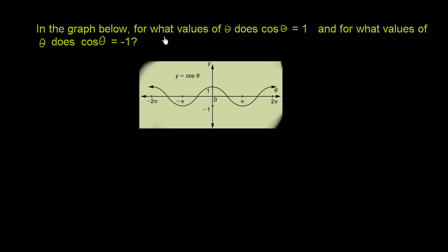In the graph below, for what values of theta does cosine of theta equal 1? And for what values of theta does cosine of theta equal negative 1? They very nicely graphed it for us. The horizontal axis is the theta axis, and the vertical axis is the y-axis. So this is the graph of y equals cosine of theta.